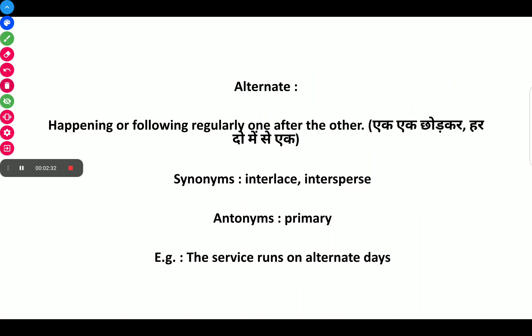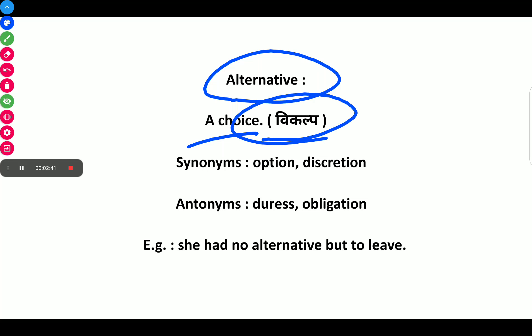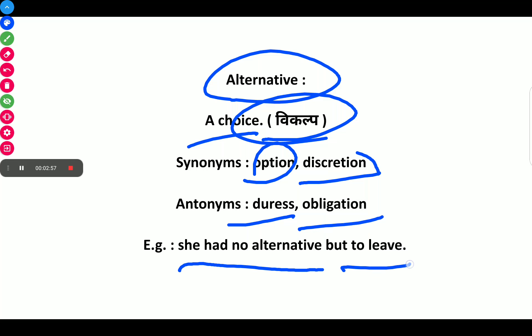The next word is Alternative, which means a choice. Synonyms of Alternative are option and discretion. Antonyms are obligation. Example: She has no alternative but to live.